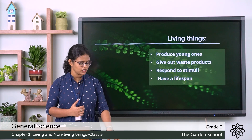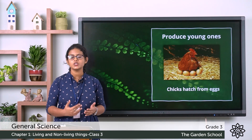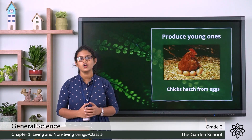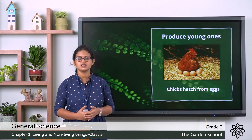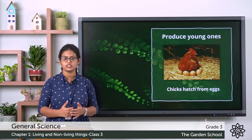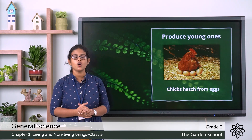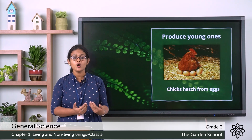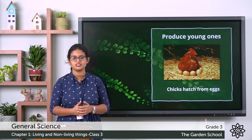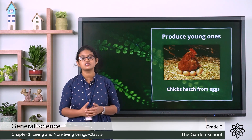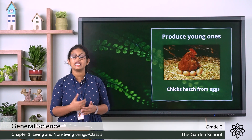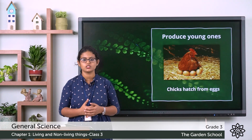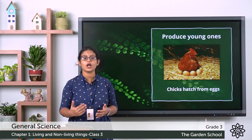The first feature is that living things produce young ones. This is one of the most important criteria of being a living thing — all living things reproduce their own kind. Animals like birds, frogs, and insects lay eggs to produce young ones. Here you can see the picture: chicks hatch from eggs. Some animals lay eggs for producing their young ones.